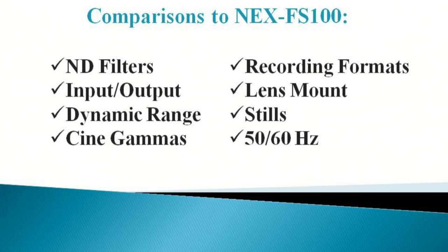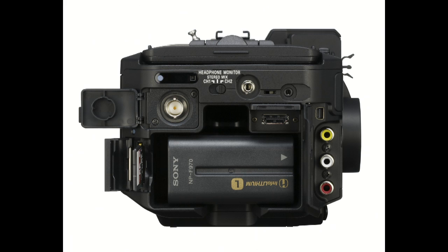Input/output is another advantage the FS700 has over the FS100. Look at the back of the camera — you'll see HD SDI output. Finally, something I can lock on to. HDMI is great; you can get video, audio, and timecode just like SDI. However, it's not a locking connector, and it's just too important to let happenstance yank a cable out of your camera.